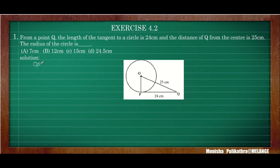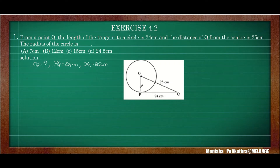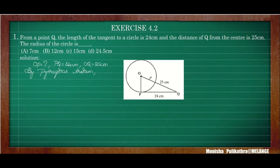PQ is equal to 24 cm and OQ is 25 cm. By the perpendicular theorem, OP will become perpendicular to PQ. So we can apply Pythagoras theorem here. By Pythagoras theorem, if this is 90 degrees, then OQ will be the hypotenuse. So hypotenuse square: OQ square is equal to OP square plus PQ square.